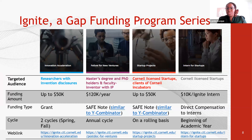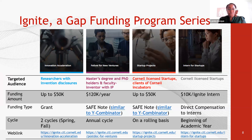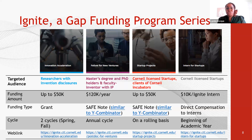Regarding IGNITE gap funding, there are several programs to support technology commercialization. The most relevant for you is IGNITE Innovation Acceleration — a small grant for faculty to continue developing and de-risking technology. It is available as a grant to faculty with an invention disclosure from campuses in Ithaca, Geneva, and Cornell Tech.